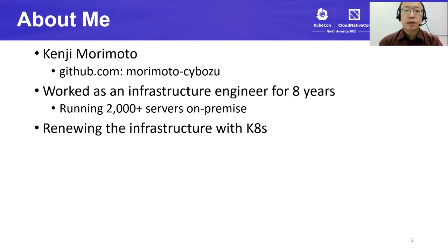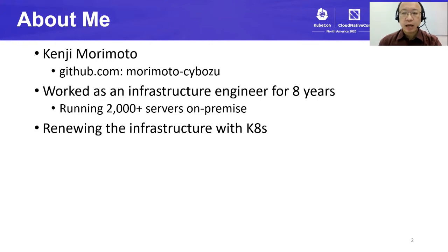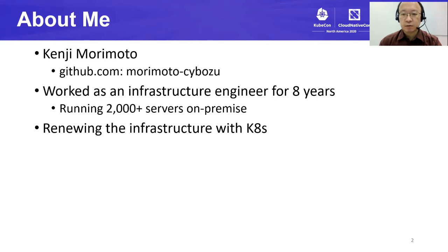First, let me introduce myself. I'm Kenji Morimoto. I'm working for Cybos and I have an account MorimotoCybos at github.com. Cybos is a Japanese IT company. We provide groupware communication tools as cloud services and I've been working as an infrastructure engineer for eight years. We have more than 2000 servers for our cloud services. Our management tools were designed as a collection of imperative commands and we are facing a lot of manual operation tasks these days.